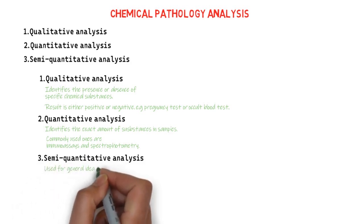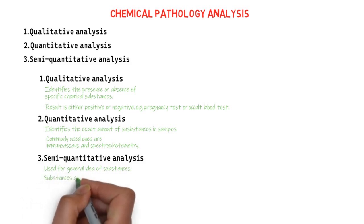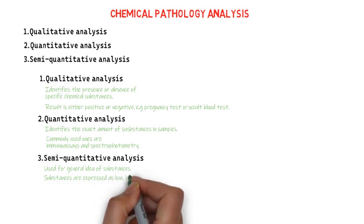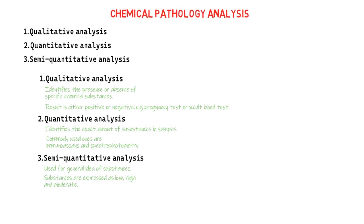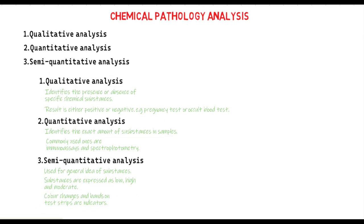Semi-quantitative analysis is used when a general idea of the substance is needed. In semi-quantitative analysis, the presence of substances are expressed in comparisons like low, high, or moderate. Color indicators and bands on a test strip serve as visual indicators when estimating concentration levels of substances in semi-quantitative analysis.